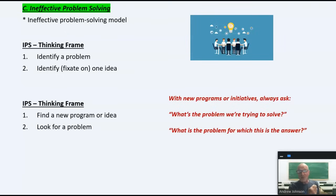The second one is to find a new program or idea. I call this shiny new thing syndrome. Oh, there's a shiny new thing. Let's try it. And then they look for a problem. Whenever someone introduces a new program or an initiative, you should always ask, what's the problem we're trying to solve here? What is the problem for which this is the answer? Is it just a shiny new thing that you think we should do? What's wrong with the old? Always identify the problem first.